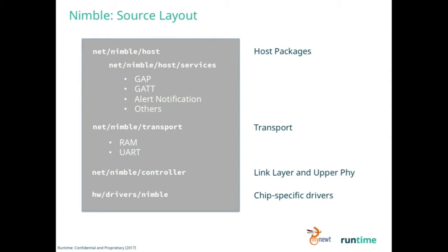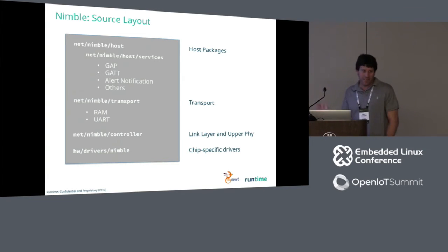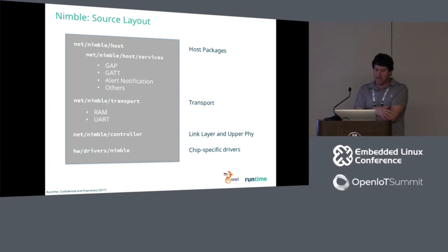We won't talk much about the package management tool called Newt here, but it allows you to see configuration options and choose what build packages you want for your application. The basic layout: if you go to the source code and download it, you can see the directory structure. We build a host-only, controller-only, and combined controller-host. The way you glue the two together is through the transport layer — UARTs and HCI transport layer, and the RAM transport is the combined host-controller transport. The code is located in a network directory; go to net/nimble/host and you'll find the host source code, with services separated in an underlying directory.